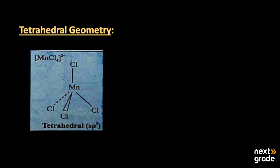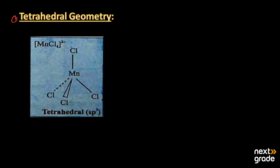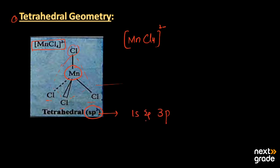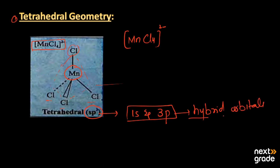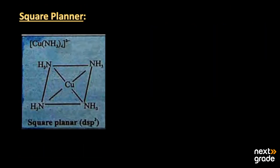The first is tetrahedral geometry. The example is [MnCl4]²⁻ — manganese with four chlorine atoms. Manganese is the central atom attached to four chlorine atoms, making a tetrahedral structure. In this tetrahedral structure, the hybridization of manganese is sp3 — one s and three p orbitals intermix to form hybrid orbitals, which bond to the four chlorine atoms around the central manganese.